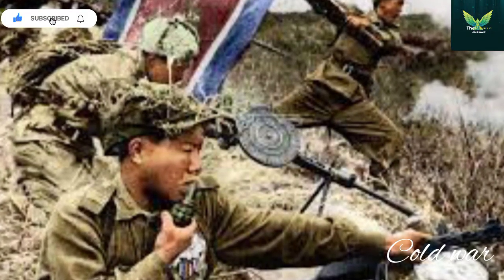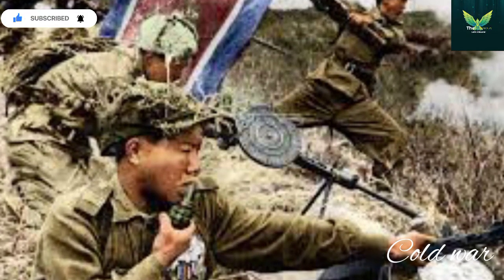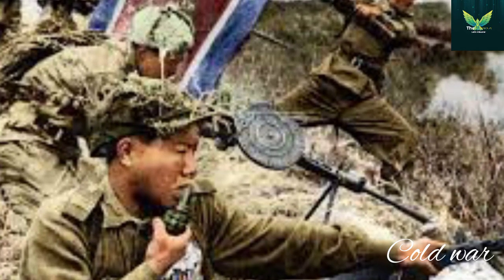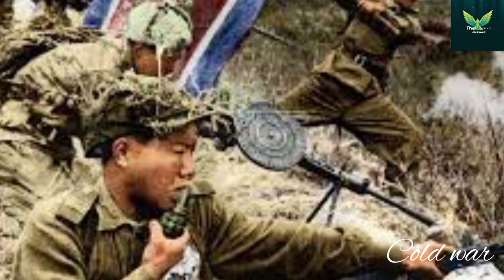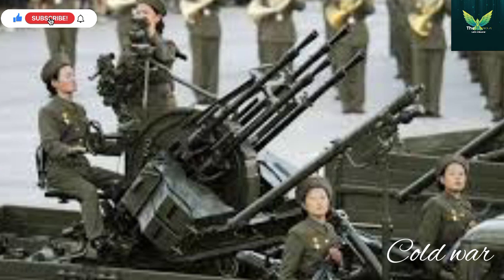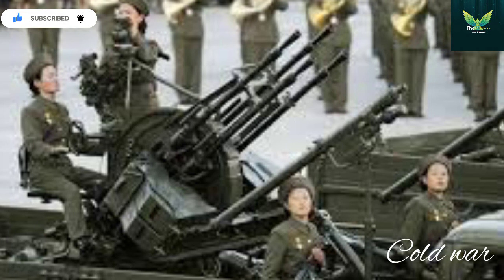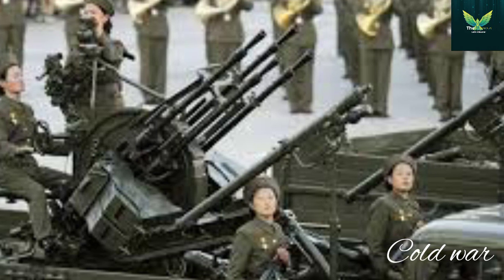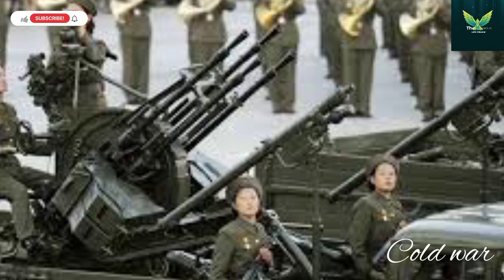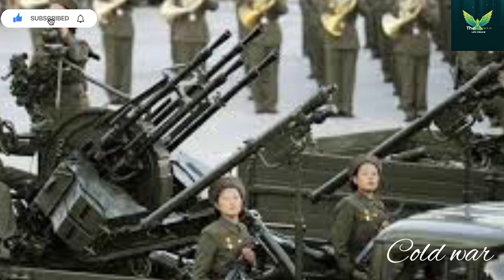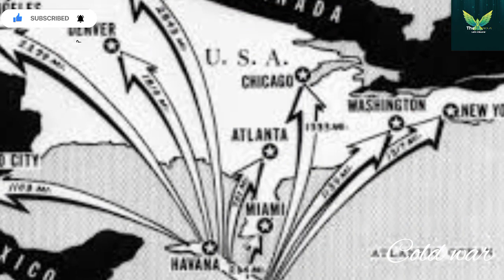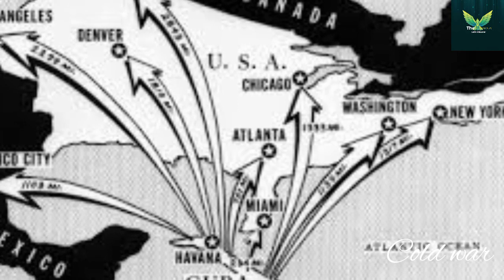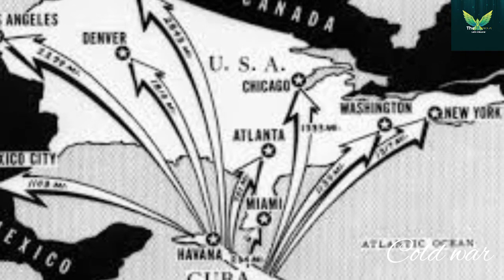A number of self-proclaimed Marxist governments were formed in the second half of the 1970s in the third world, including Angola, Mozambique, Ethiopia, Cambodia, Afghanistan, and Nicaragua. Détente collapsed at the end of the decade with the beginning of the Soviet-Afghan War in 1979. The early 1980s was another period of elevated tension, as the United States increased diplomatic, military, and economic pressures on the Soviet Union at a time when it was already suffering from economic stagnation.